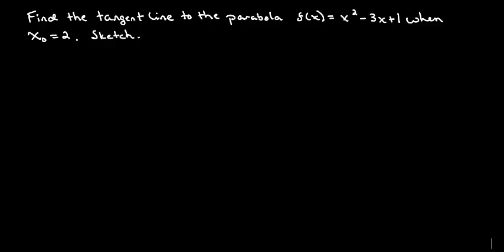We're asked to find the tangent line to the parabola f(x) = x² - 3x + 1 at the point x = 2. We're also asked to sketch a graph of this guy out.